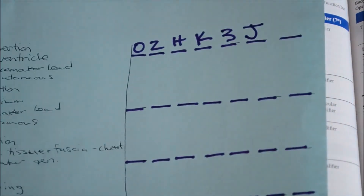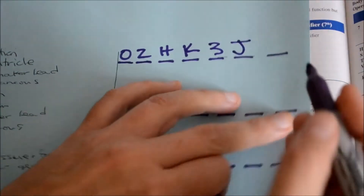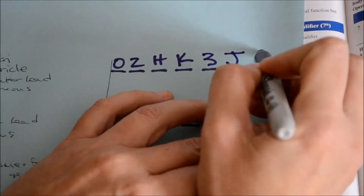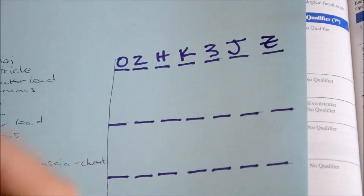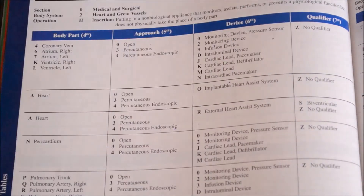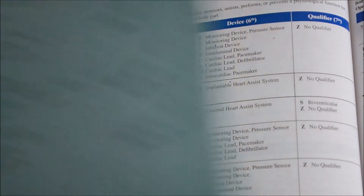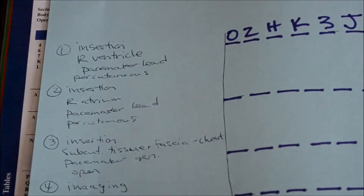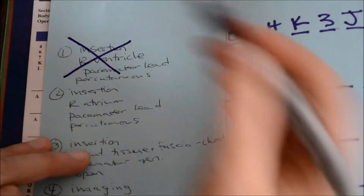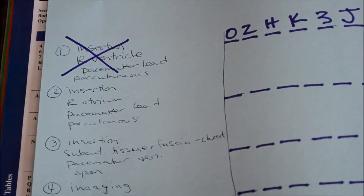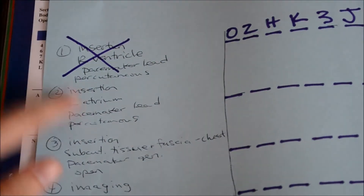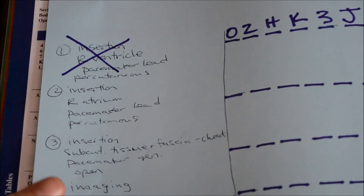Then our qualifier column, the seventh character placement, says Z — no qualifier. So we put a Z; there is no other information that needs to be captured in this portion of the operation. Our first code is now done.